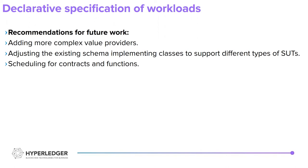Coming to recommendations for future work: there can be more complex value providers under Caliper, like weighted Boolean values or randomly generated strings. The value providers right now are relatively simpler, but I hope more complex ones can be added so that it's easier to define values. The second point is that the current schema is more platform-oriented — we started with a Fabric integration test as a reference to build the initial schema, and it doesn't take into account how the same system might work for Ethereum. The third point is scheduling of contracts and functions, like round-robin, instead of just randomly picking them.